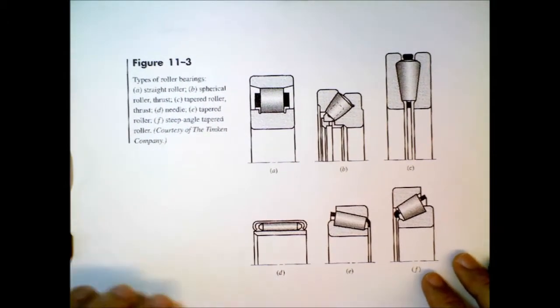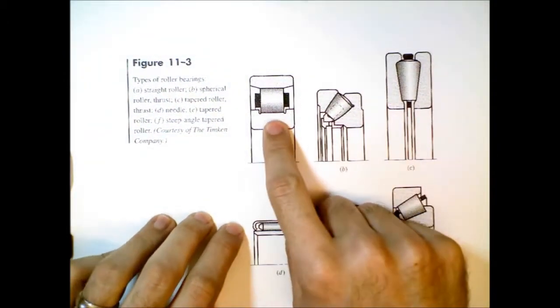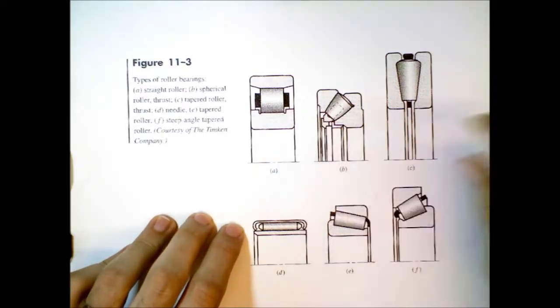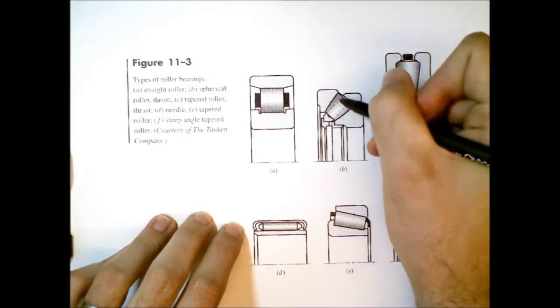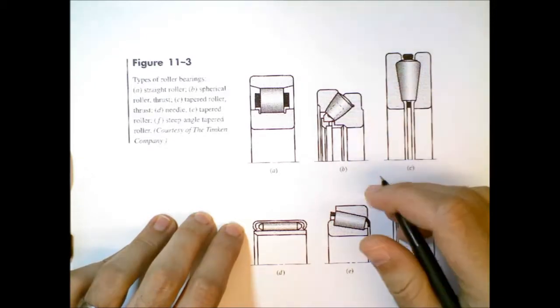Here we have several other types. Here's a straight roller or cylindrical bearing. Here's a spherical bearing. You can tell it has these spherical-looking contours on the sides of that bearing.